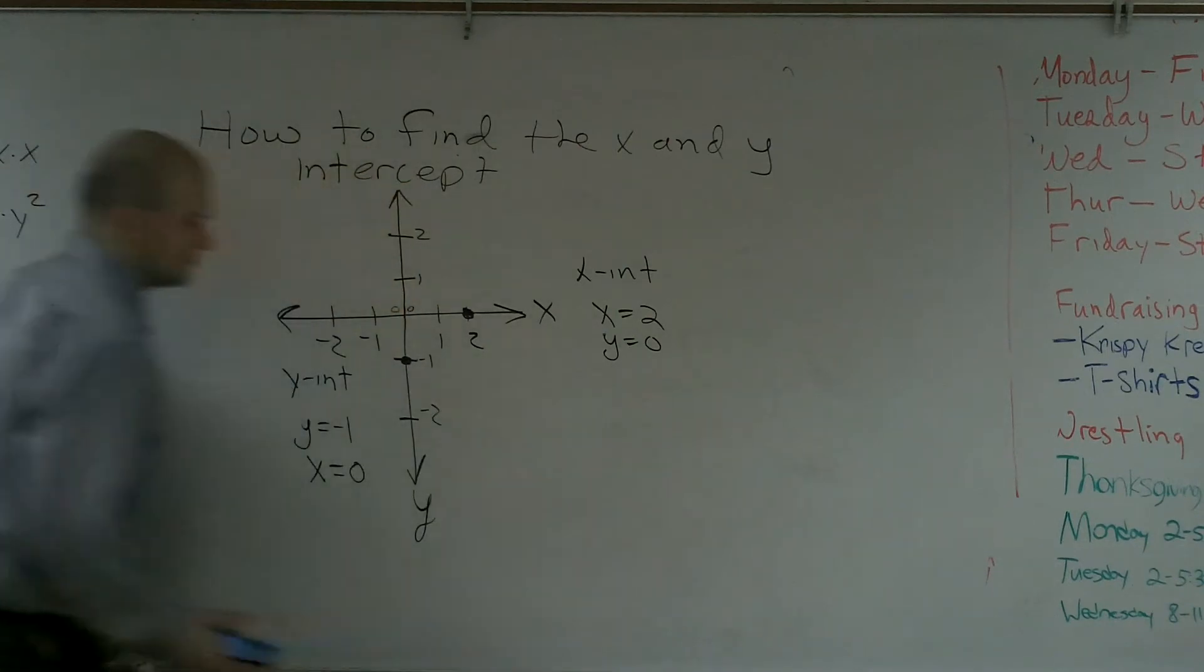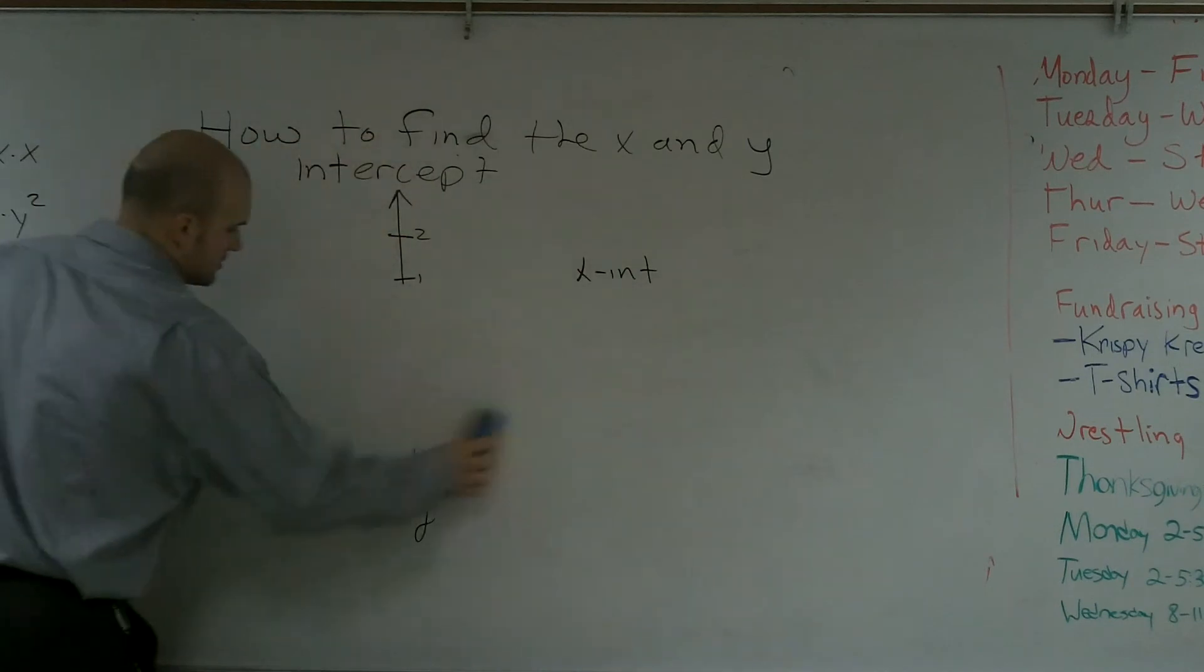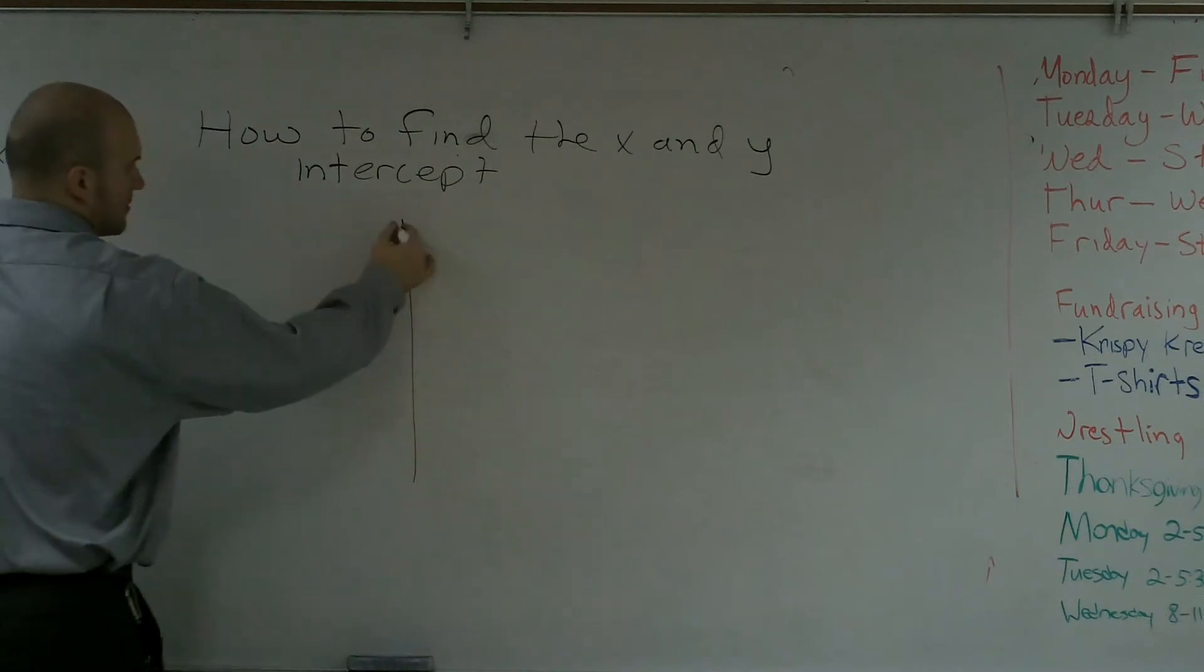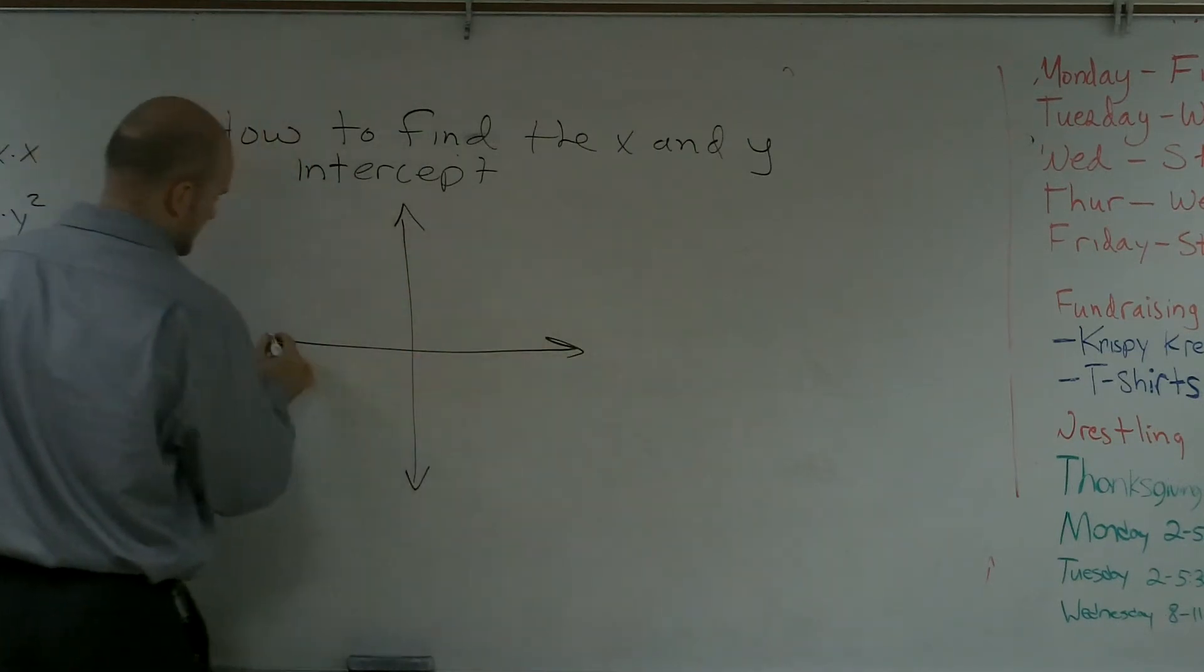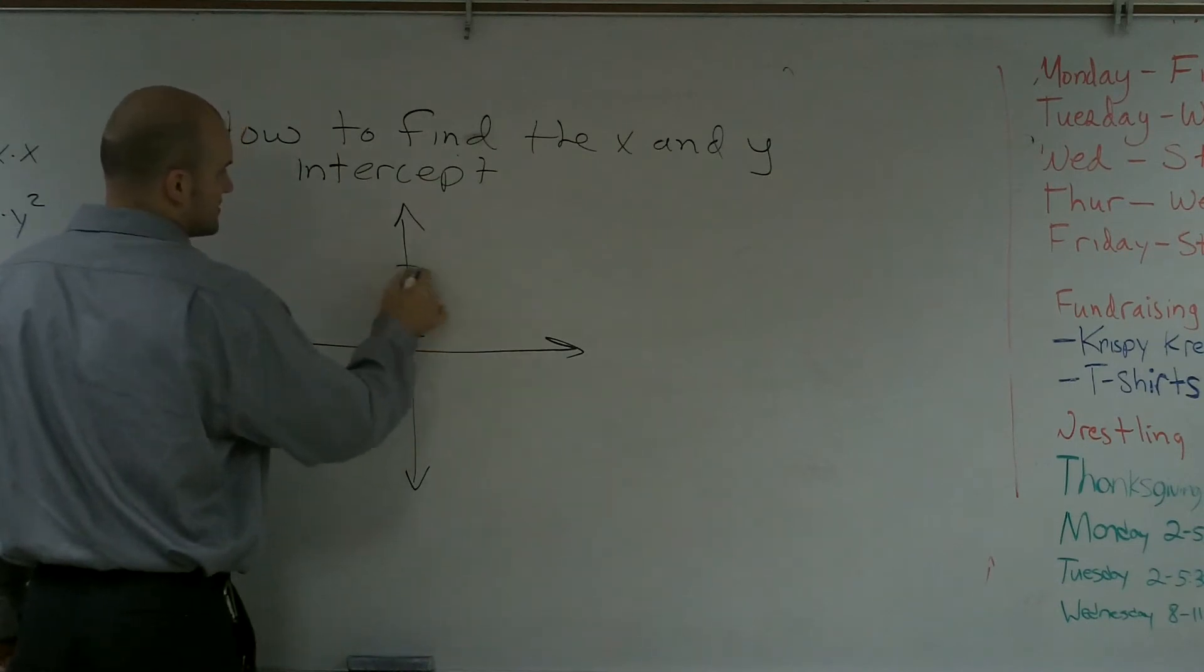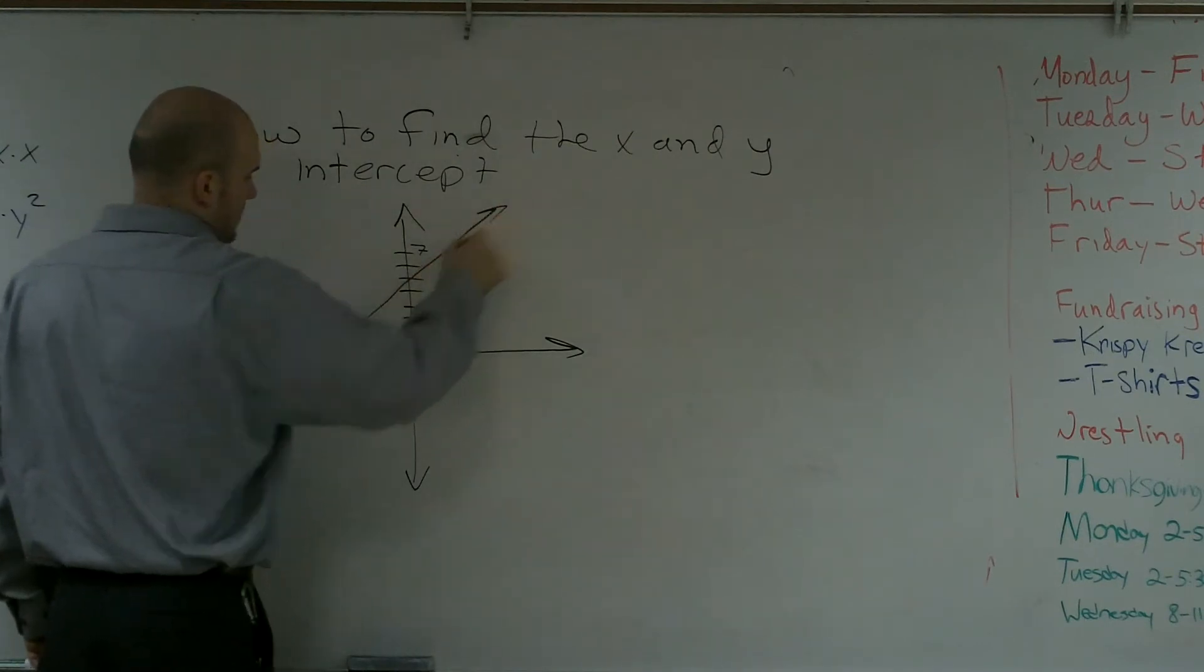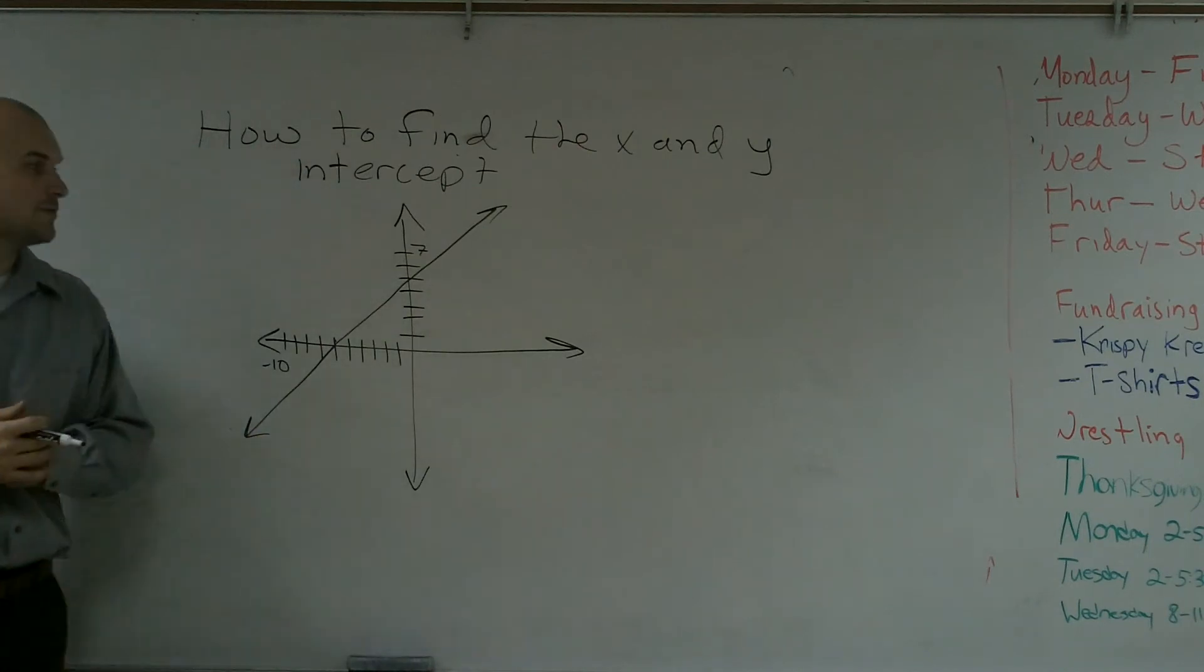So now, if I was even going to give you a problem, and like I said, I'm just going to sketch something here. You usually have an x and y axis. I'll say 1, 2, 3, 4, 5, 6, 7, 8. And I say, how to find the x and y intercept?